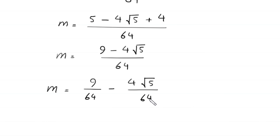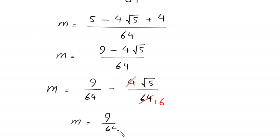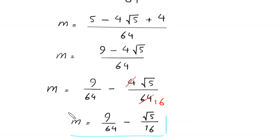Therefore the final answer is m equals 9 over 64 minus 4 root 5 over 64, which simplifies to m equals 9 over 64 minus root 5 over 16. This is the final value of m for the given radical equation.